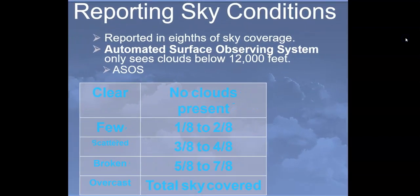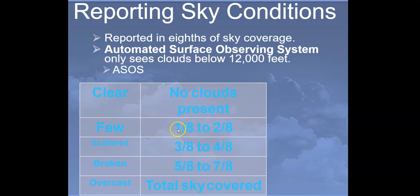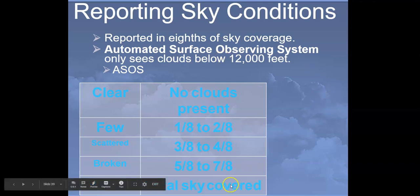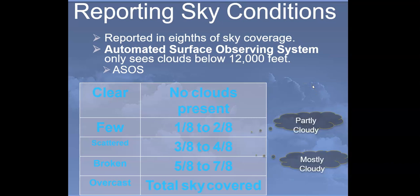When we report sky conditions, we report them in eighths. The Automated Surface Observing System, or ASOS, only sees clouds below 12,000 feet. 'Clear' means no clouds present. 'Few' means one-eighth to two-eighths — about one-fourth of the sky covered. 'Overcast' means the whole sky is covered. 'Partly cloudy' means few to scattered. Those are the terms used when describing what sky conditions are going to be like.